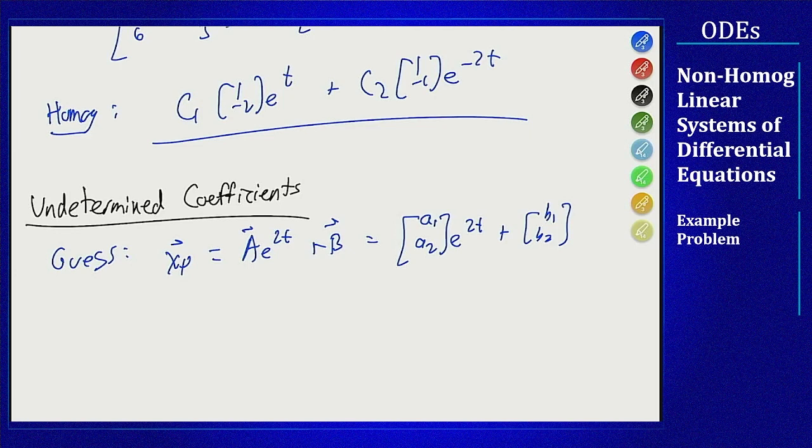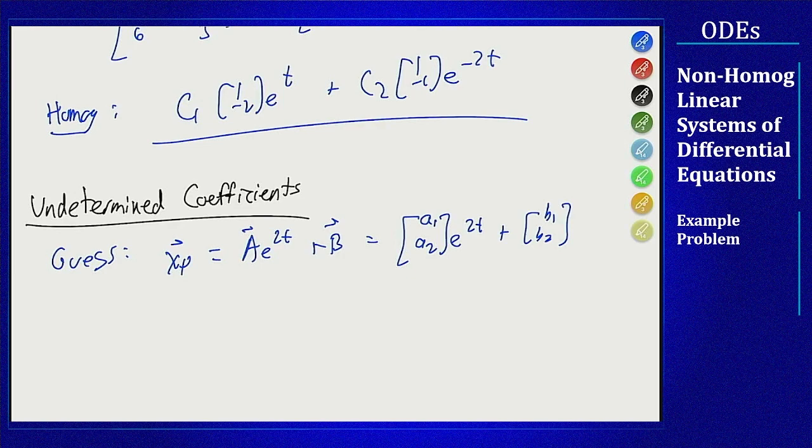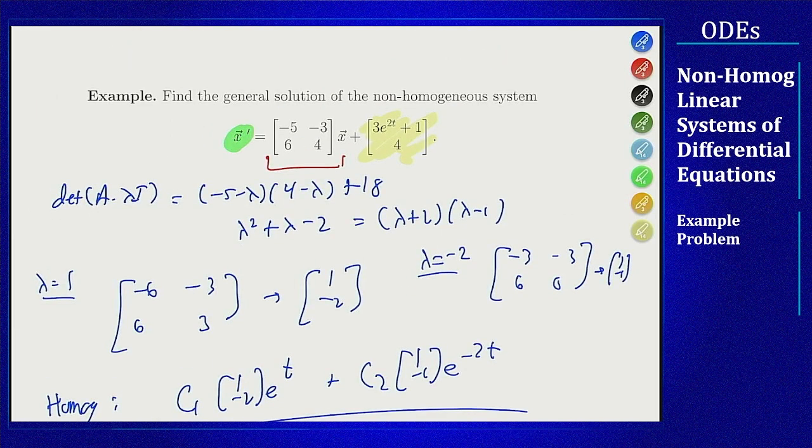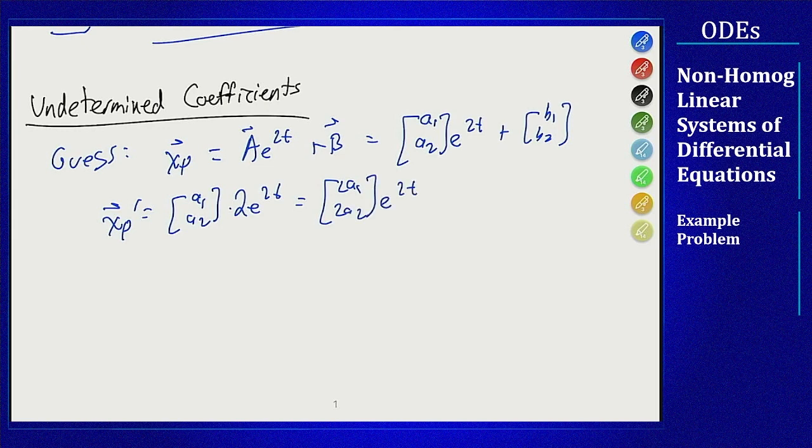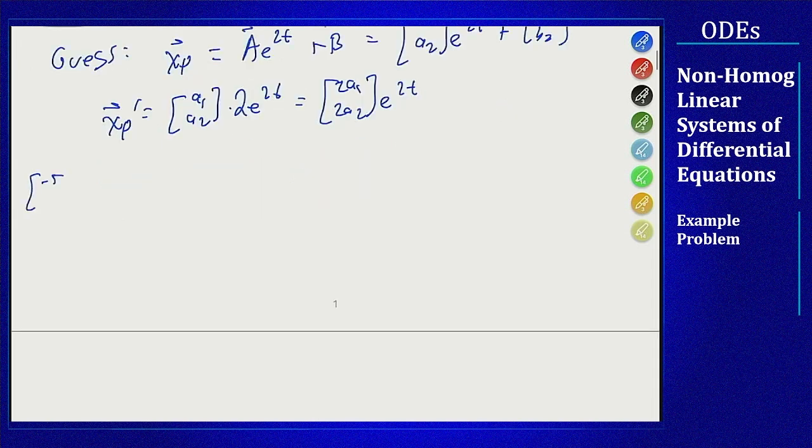To see if this works I want to plug this into my equation and see what I have to pick for a1, a2, b1, b2 to make this true. By plugging it in I'm going to evaluate the left hand side which is the derivative, and then the right hand side which is that matrix times the vector plus my extra function term. For the derivative term we get xp prime is 2a1 and 2a2 times e to the 2t. The other side of the equation is the matrix minus 5 minus 3, 6, 4 times x plus my right hand side 3 e to the 2t plus 1 and 4.